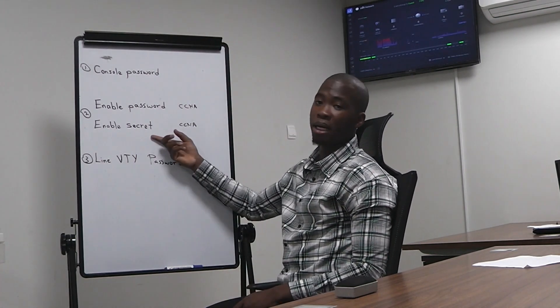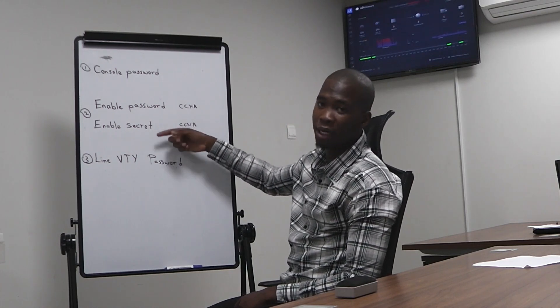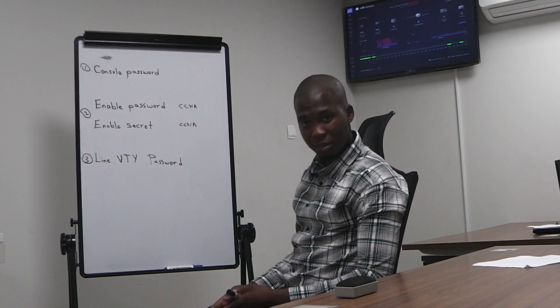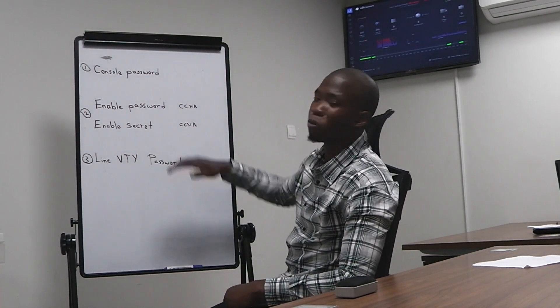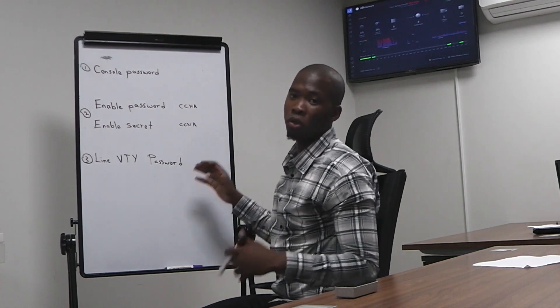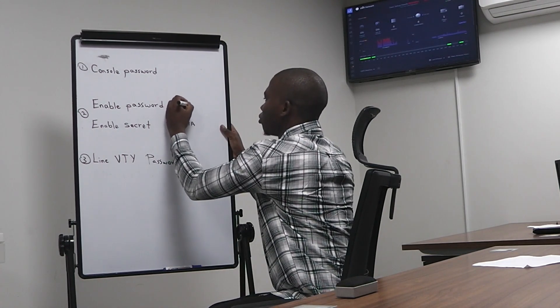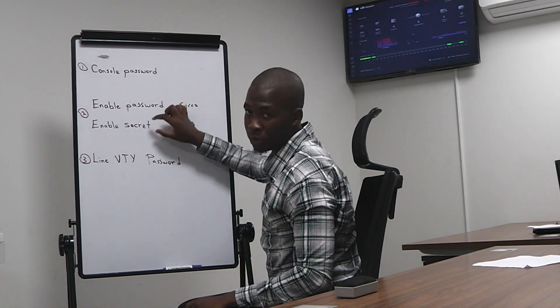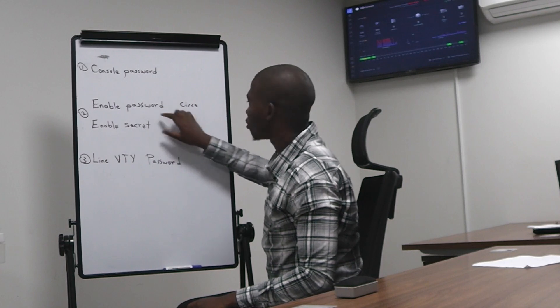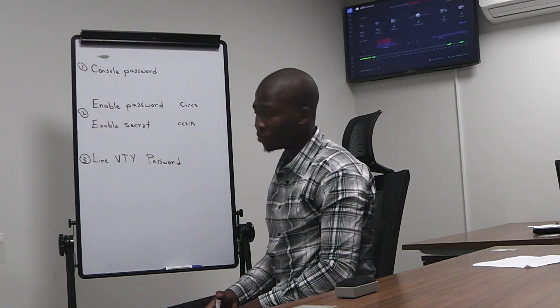The enable secret will encrypt the password you enter. Enable secret is a newer command than enable password. It is possible to enter both at the same time, but if you do, only enable secret will take effect. So even if enable password is configured first with 'cisco,' and enable secret is configured with 'ccna,' when moving to privilege EXEC mode, only the enable secret password 'ccna' will work — it will not accept the enable password.